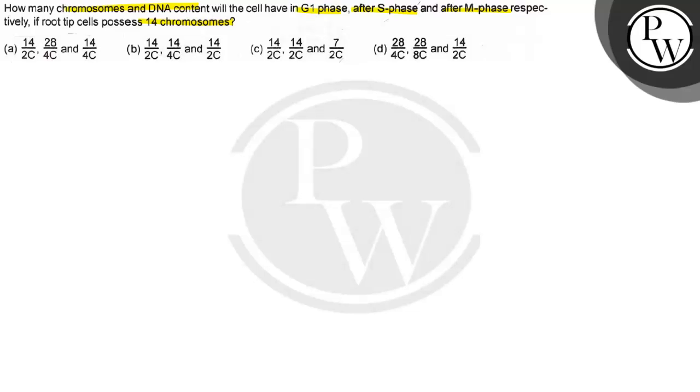Option D is 28 chromosomes 4 chromatids, 28 chromosomes 8 chromatids, and 14 chromosomes 2 chromatids. So this is the key concept that in the cell cycle,